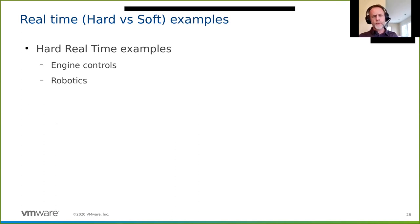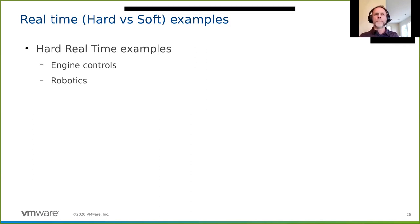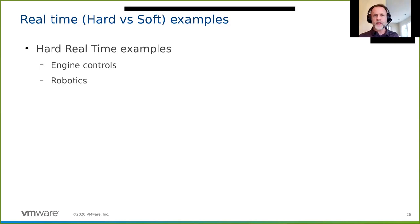Some hard real-time examples: engine control systems. I worked on the C-17 engine control system—a hard real-time system, not Linux, but they spent a lot of money developing a reliable system that made all its deadlines. It took about 10 years of rigorous testing before deployment. Robotics on an assembly line also needs to be real-time: when a product comes by that the robotics has to work on, it can't be late.